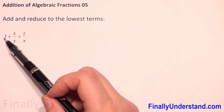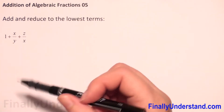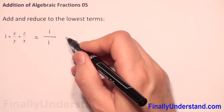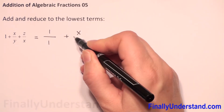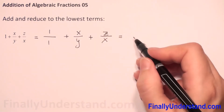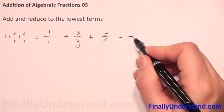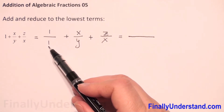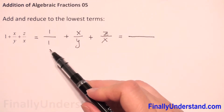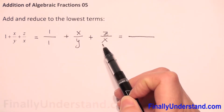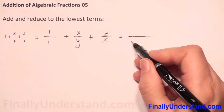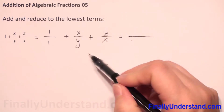We have y and x and first we have a number. We can always change the number to a fraction — I can just put 1 over 1, and the rest we will copy. Next, as I said, we need to have the same denominator. In the denominator we have 1, y, and x.